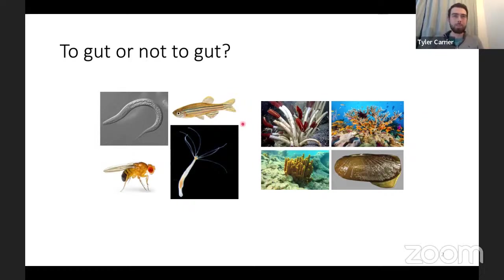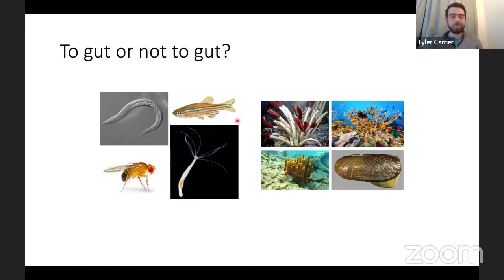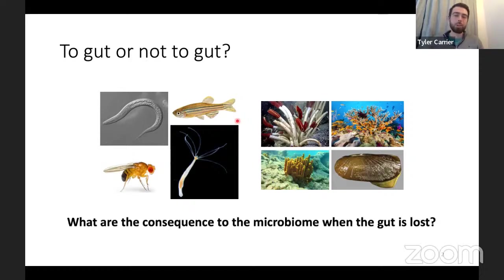When we think about the gut microbiome, humans or model systems come up quite often, with broad implications for host biology. While that's definitely true, for the systems without a gut they're often talked about a little differently. So one question that I had: what are the consequences to the microbiome when the gut is lost? What if you went from one side to the other — how does the microbiome change?